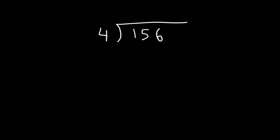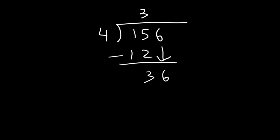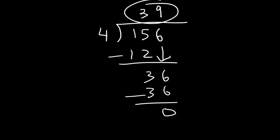You can confirm using long division. 4 goes into 15 three times; 4 times 3 is 12; 15 minus 12 is 3. Bring down the 6. 4 goes into 36 nine times with remainder 0. So 156 divided by 4 is 39.